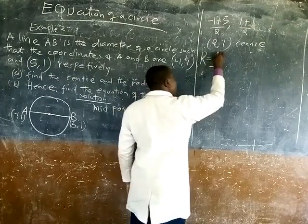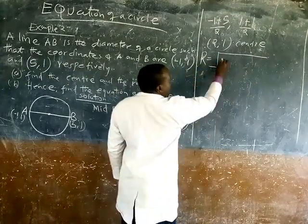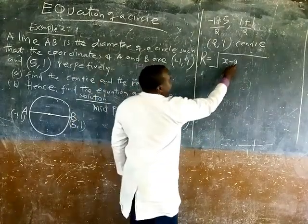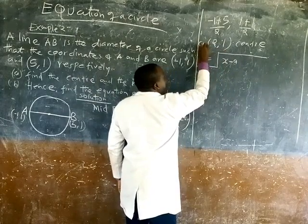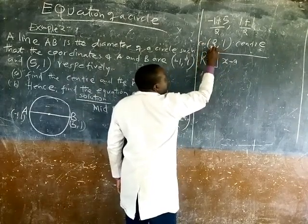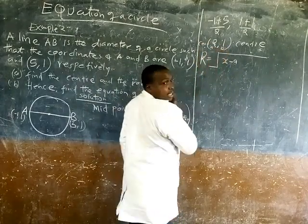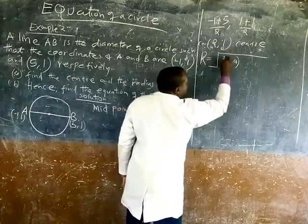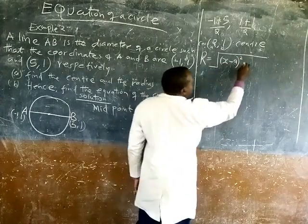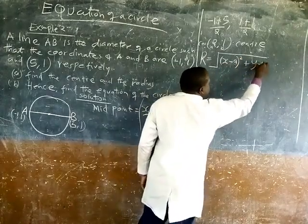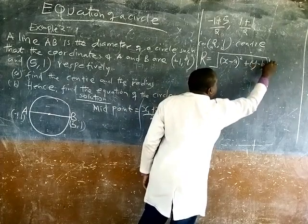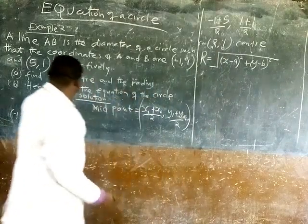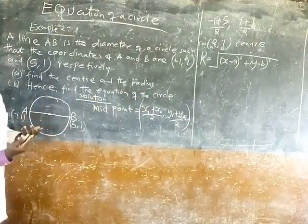How do we get the radius? Radius is equal to the square root of X minus A. So what is A? A is the middle, the center. This is A and this is B. A stands for X, B stands for Y. So X minus this one, plus Y minus B square, all in a square root. Now you take one of them.